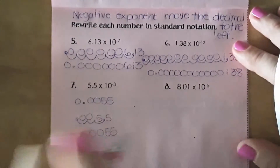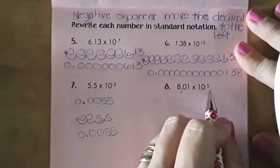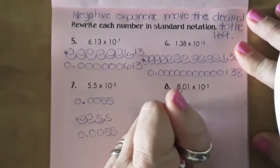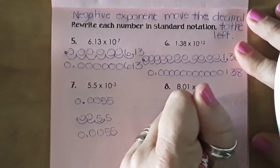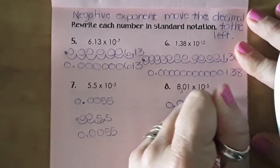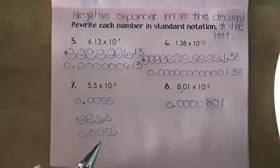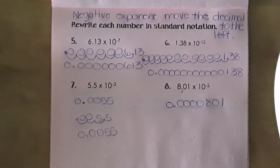For the last one, I need to move over one space. Five minus one is four, so I need four zeros and then the eight zero one. This is how you change scientific notation into standard form — or standard notation — using a negative exponent.